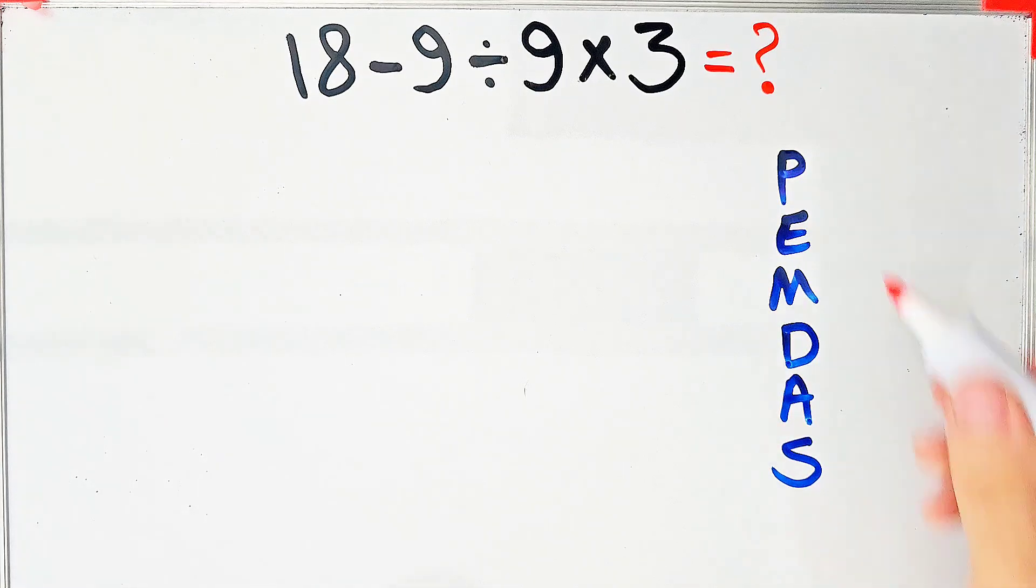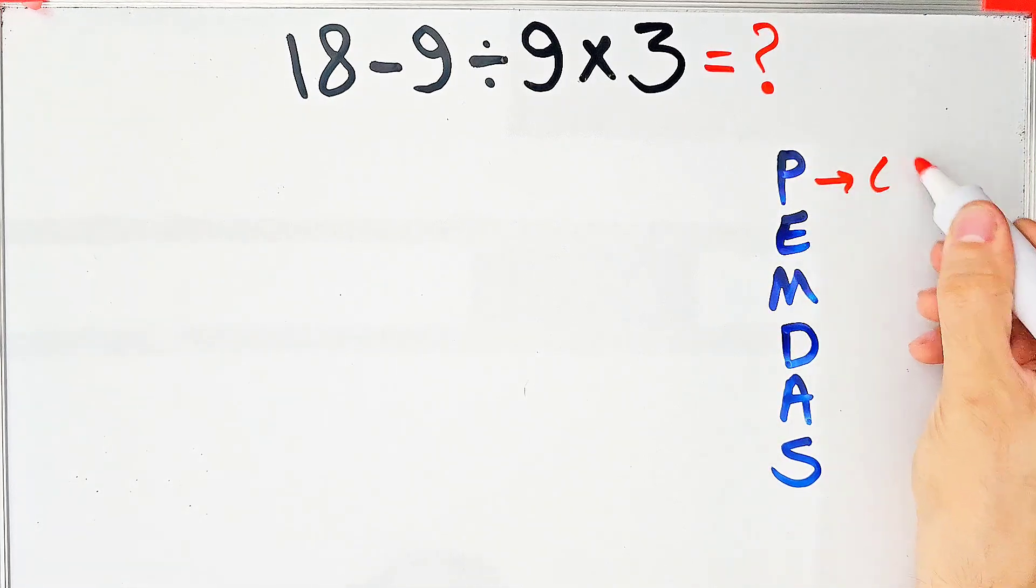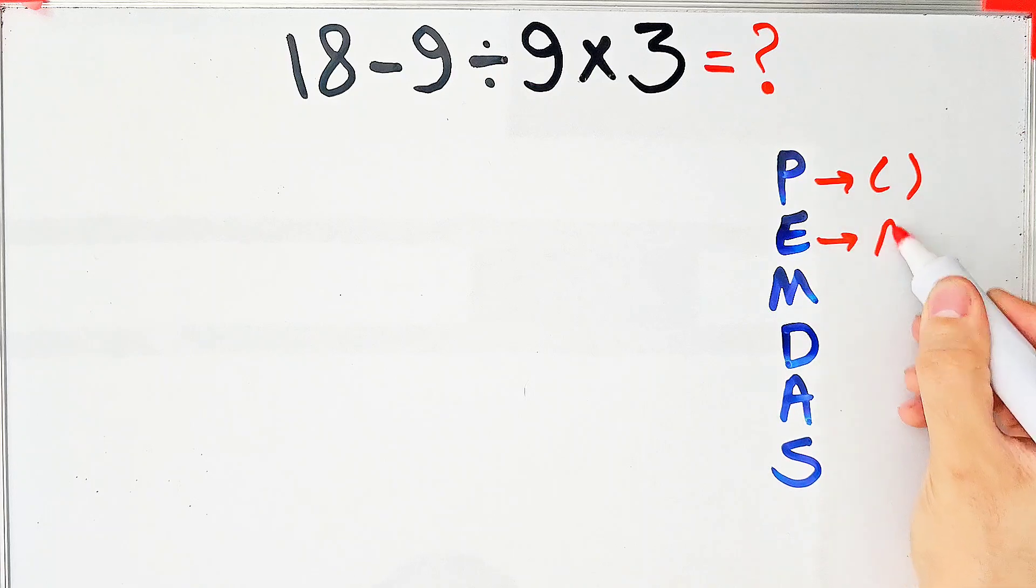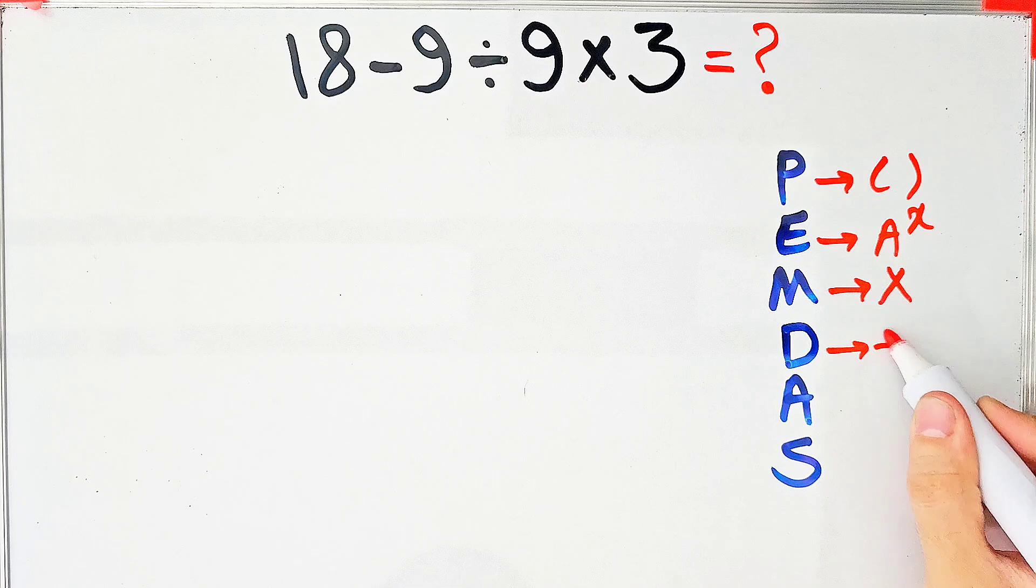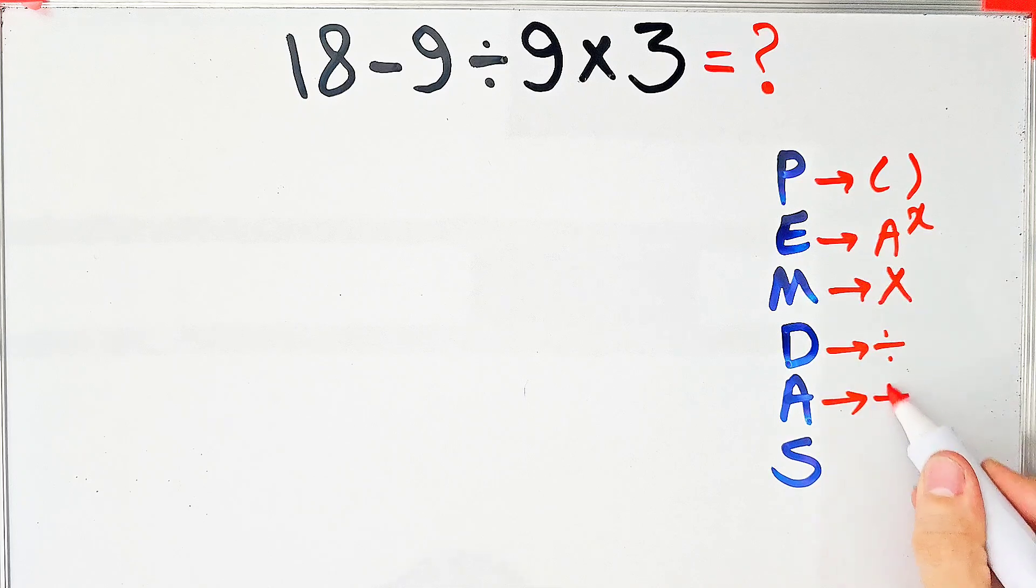In this rule, P stands for parentheses, E stands for exponent, M stands for multiplication, D stands for division, A stands for addition, and S stands for subtraction.